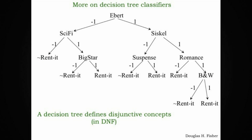In this video, we'll talk a little bit more about decision tree classifiers and their representational power. In particular, decision trees define disjunctive concepts. Decision trees were first proposed by cognitive psychologists as ways of representing human disjunctive concepts, and algorithms for learning decision trees were proposed as models of human concept learning. Let's turn our attention to how decision trees represent disjunctive concepts.